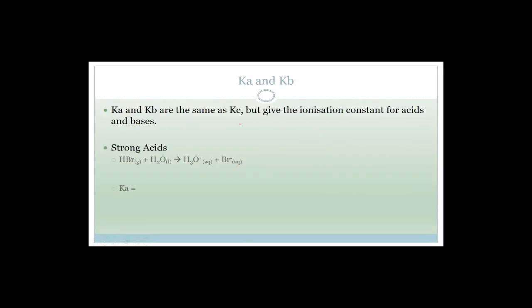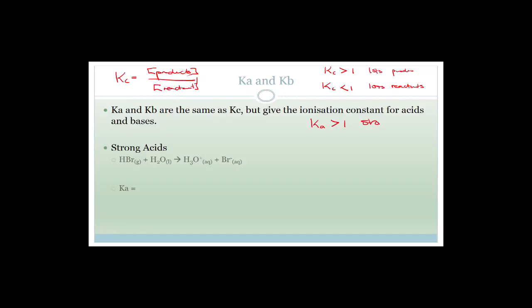Now let's talk about Kₐ and K_b. We've just finished chemical equilibrium, where Kc equals the concentration of the products over the concentration of the reactants. Similarly, if Kₐ is greater than 1, we have a strong acid because it has dissociated completely. If Kₐ is smaller than 1, we have a very weak acid.